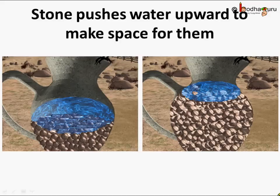You know every stone takes some space. So the stones at the bottom of the pot were pushing the water level upward to make some space for themselves at the bottom and hence the water level rose up and the crow was able to drink the water.